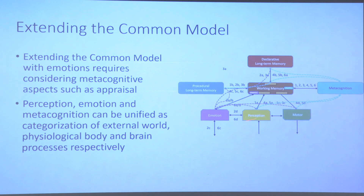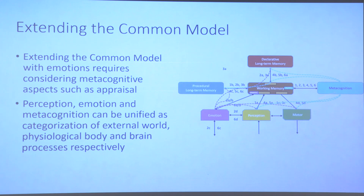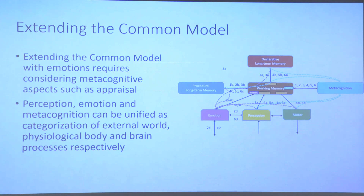If you think of perception as categorizing inputs from the external world, you can think of emotion similarly as categorizing the physiological state of the body. Then you can think of metacognition as categorizing the state of brain processes within the brain itself. So as perception looks at the world, emotion looks at the body, and metacognition looks at the brain itself—but these are fundamentally similar sources of information for the overall cognitive architecture.